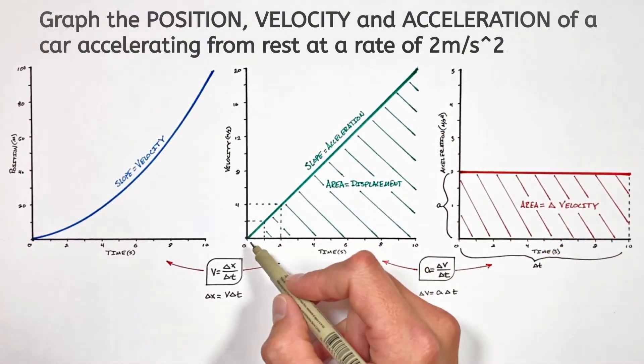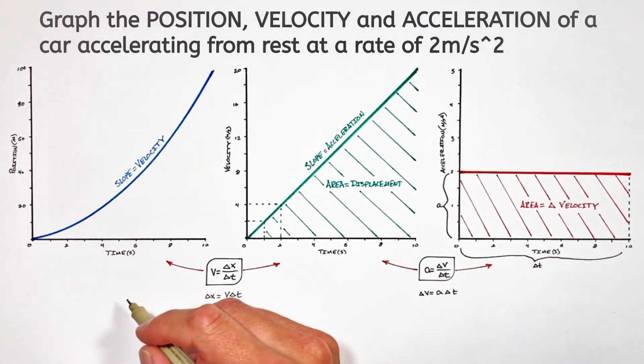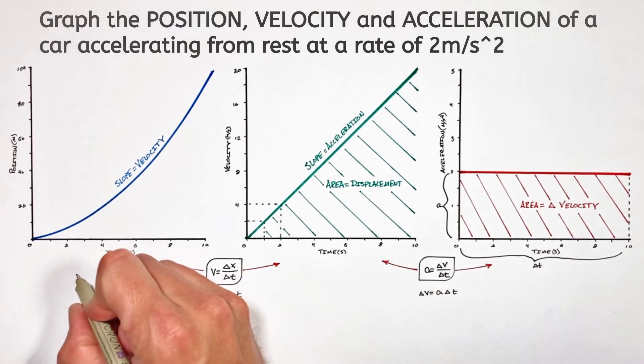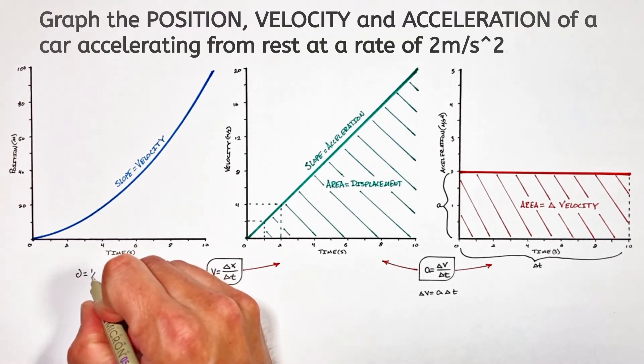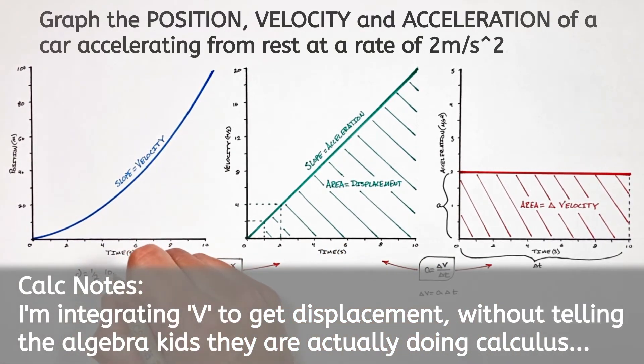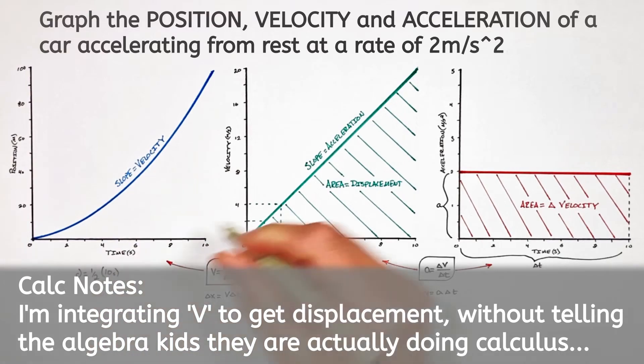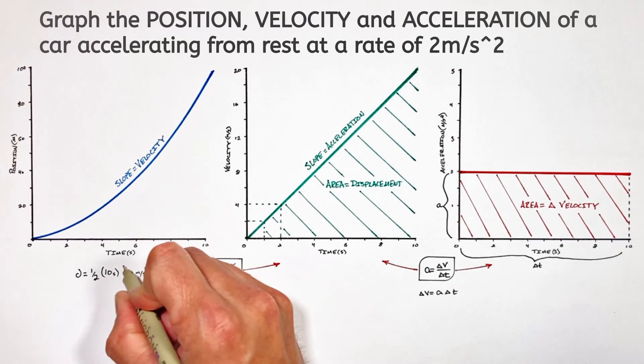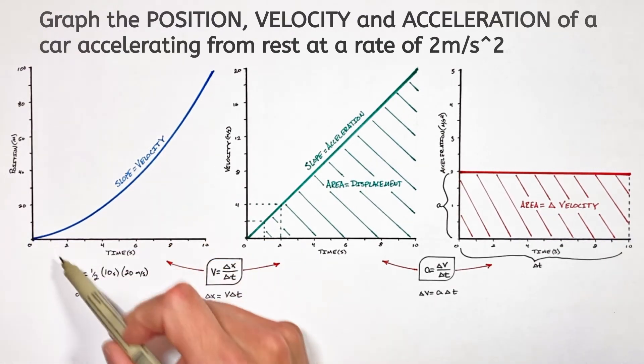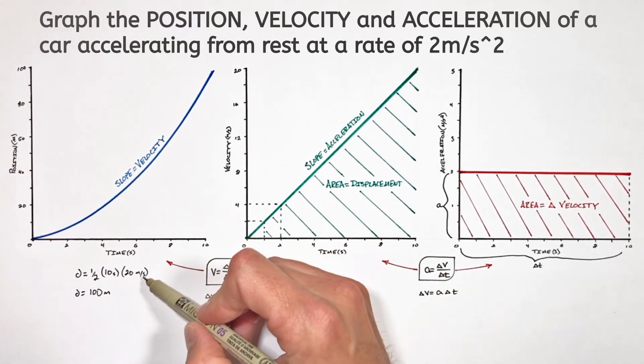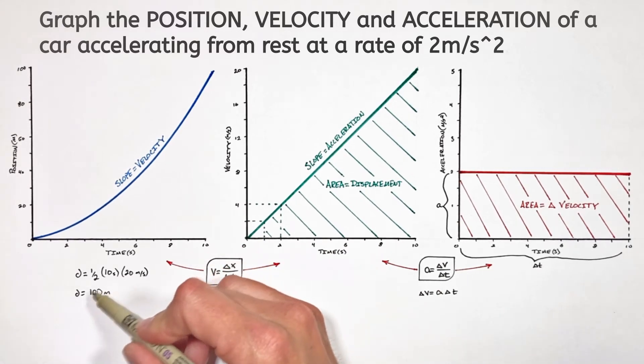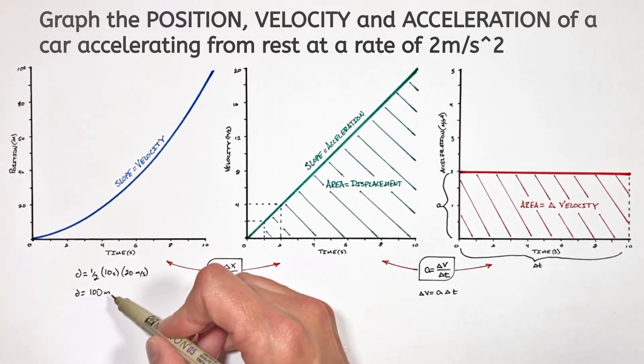So calculating out the area of this triangle will give us displacement. The area of a triangle is given by 1 half base times height. So our displacement is going to equal 1 half multiplied by the base, that's 10 seconds, multiplied by the height, that's 20 meters per second. And we get a total displacement from start to finish of 100 meters. You'll notice our units of seconds times meters per second cancel out, giving us displacement that is measured in meters.